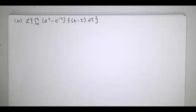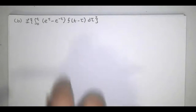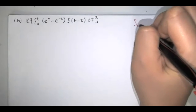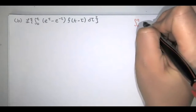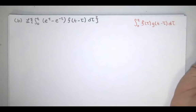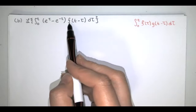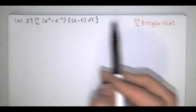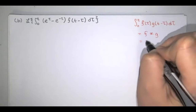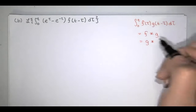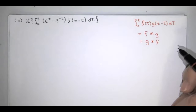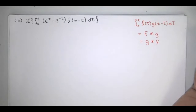In part b, we have the Laplace transform of an integral from 0 to t. That looks like a convolution, so we go to the definition. The convolution has the pattern: the integral from 0 to t of f of tau times g of t minus tau d tau. Don't let the notation bother you — this is just the form for the convolution of f and g, and as we proved earlier, that operator is commutative.